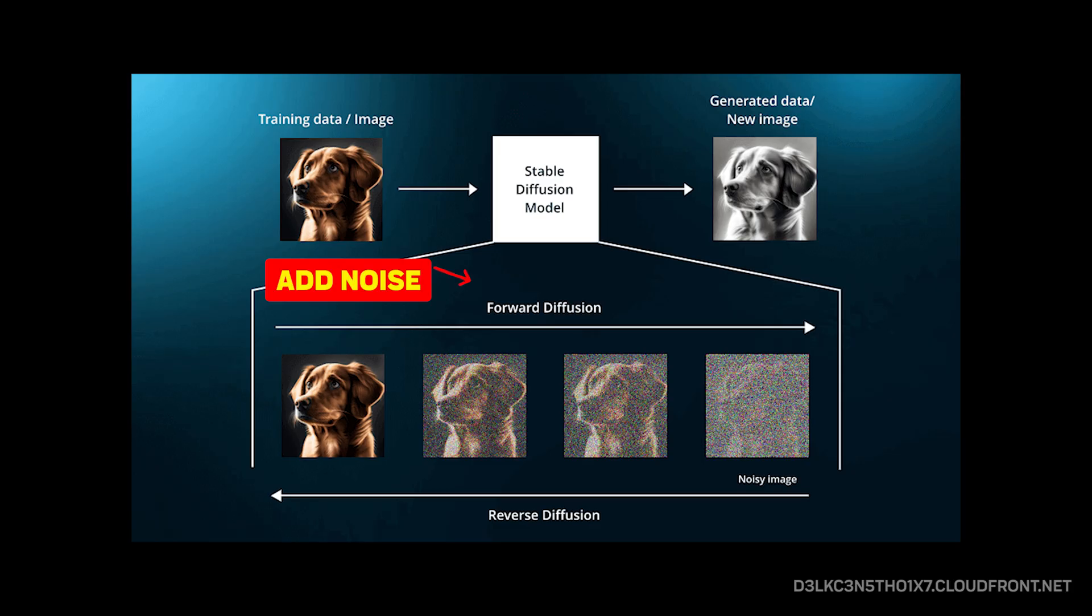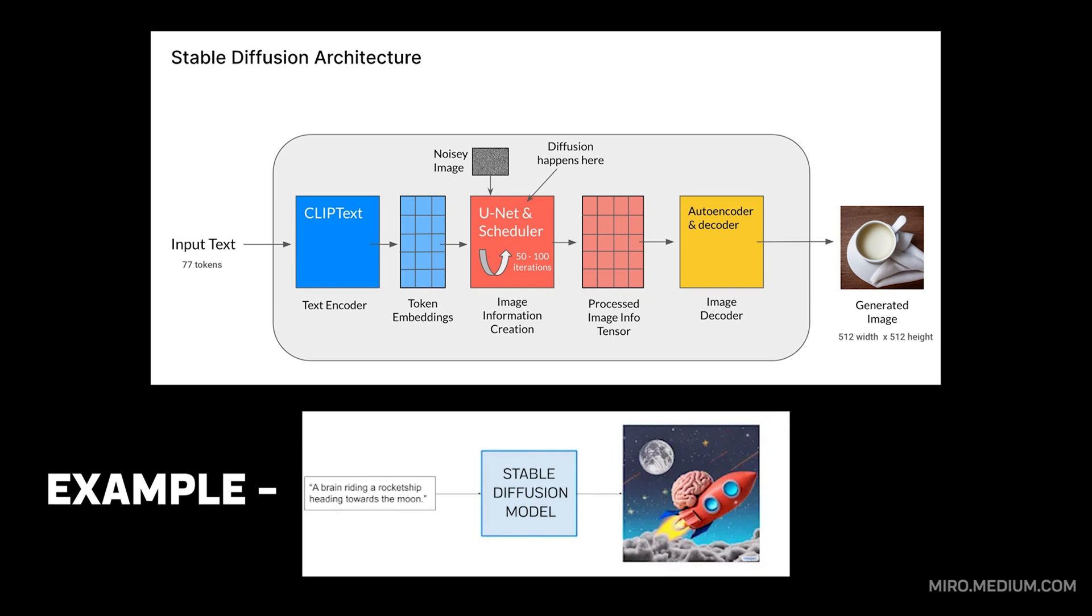Modern image generators like Stable Diffusion use a different approach called Diffusion Models. They learn by gradually adding noise to images and then reversing the process. Given a text prompt, they can start from random noise and progressively refine it into stunning images that match your description.